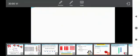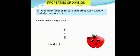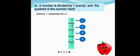Now let's understand the properties of division. First property: a number, except 0, divided by itself gives a quotient of 1. For example, 4 ÷ 4 = 1, and similarly 5 ÷ 5 = 1. Second property: a number divided by 1 gives a quotient that is the number itself. For example, 4 ÷ 1 = 4, and similarly 5 ÷ 1 = 5.